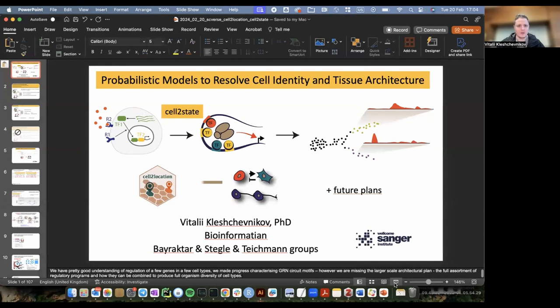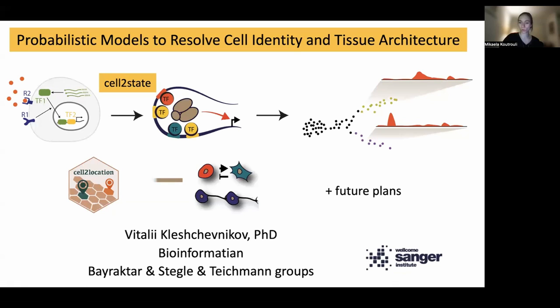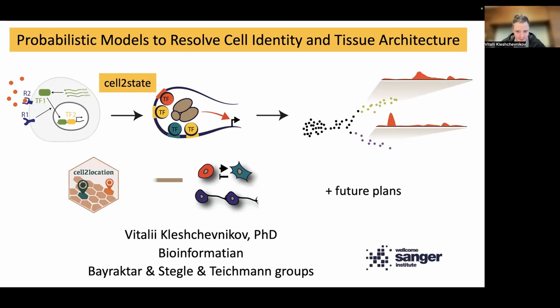Thank you very much for the introduction and for inviting me. Today I will talk about how we think about creating probabilistic models for resolving cell identity and tissue architecture — mostly about the tissue architecture part. There will be some results about ongoing work, but mostly let's discuss some foundational principles of how to think about architecture mapping.